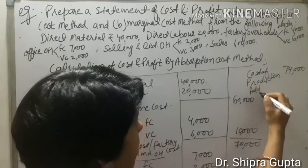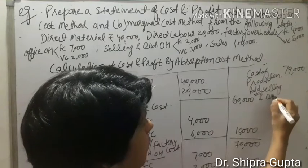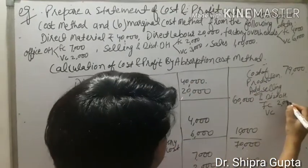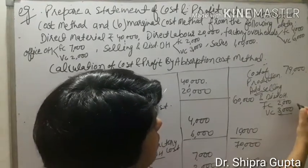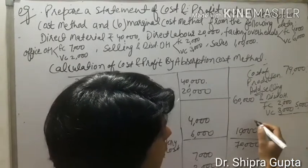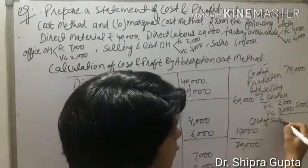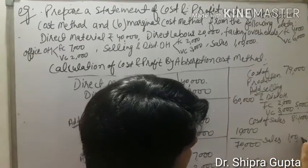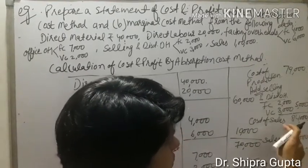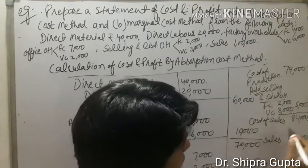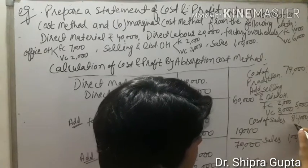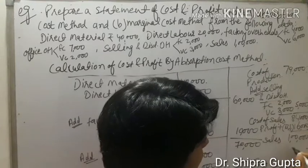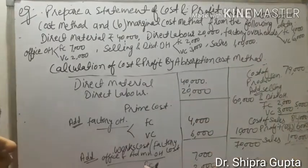Then we add selling and distribution overhead, again divided into fixed cost Rs. 2,000 and variable cost Rs. 3,000, totaling Rs. 5,000. Adding this gives cost of sales of Rs. 84,000. Sales is Rs. 1,00,000, so we deduct cost of sales: Rs. 1,00,000 minus Rs. 84,000 equals Rs. 16,000 profit. This is the balancing figure and is the statement as per absorption cost method.